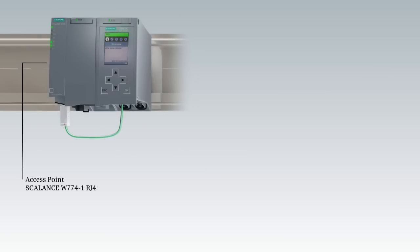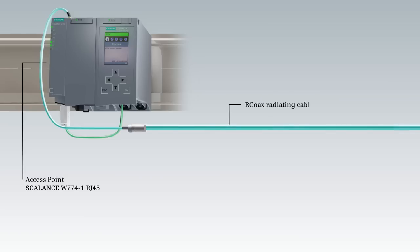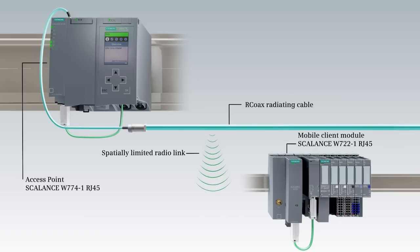Electrical signals are radiated from the access point as radio waves, like with a regular antenna. On the client side, the radio waves are received by an antenna mounted near the radiating cable and forwarded to the client module.